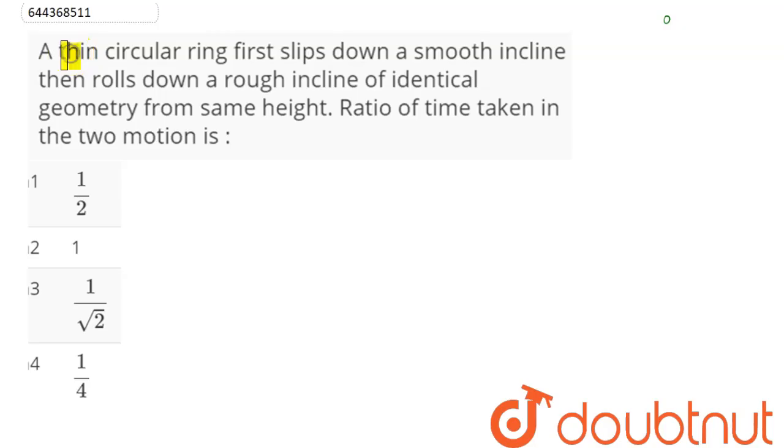Question is: a thin circular ring first slips down a smooth incline, then rolls down a rough incline of identical geometry from same height.